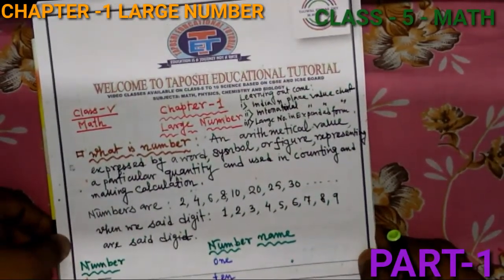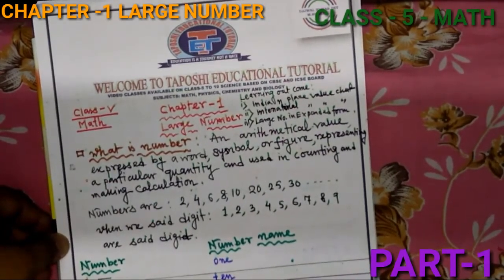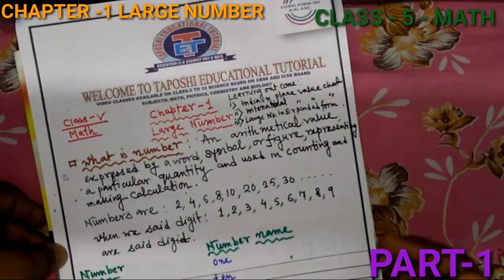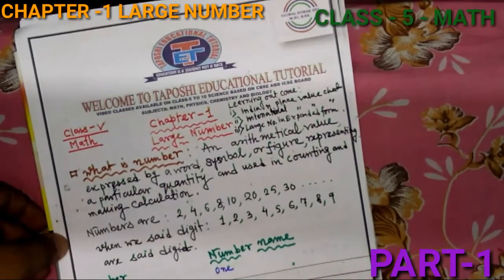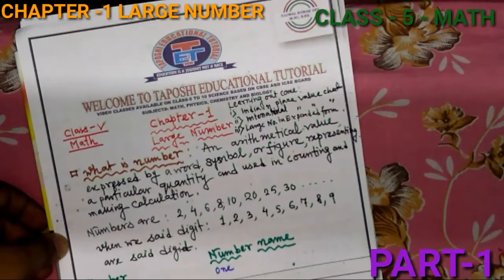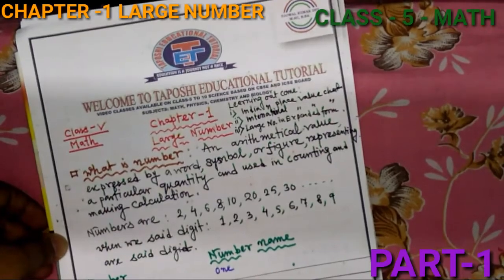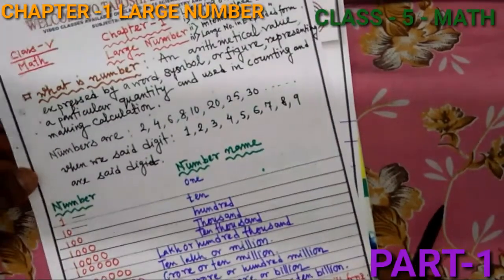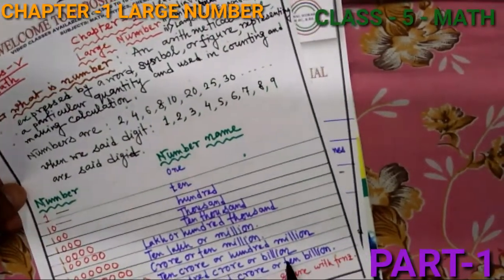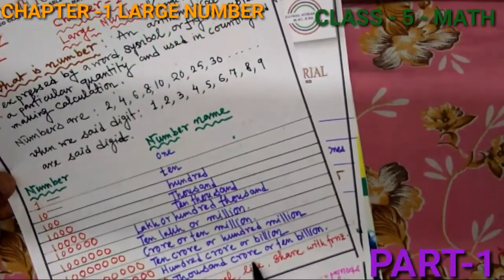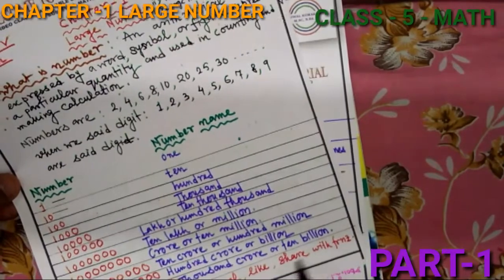Here I have put some numbers and given their names: 1, 10, 100, 1,000, 10,000, 1,00,000 (one lakh or one million), 10 lakh or 10 millions (crore), 10 crore or 100 millions, 100 crore or one billion, and 1,000 crore or 10 billion.